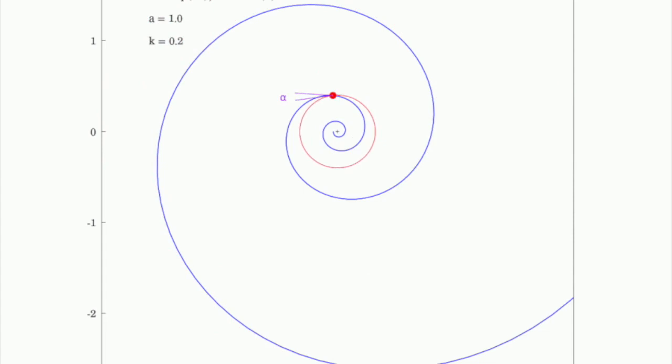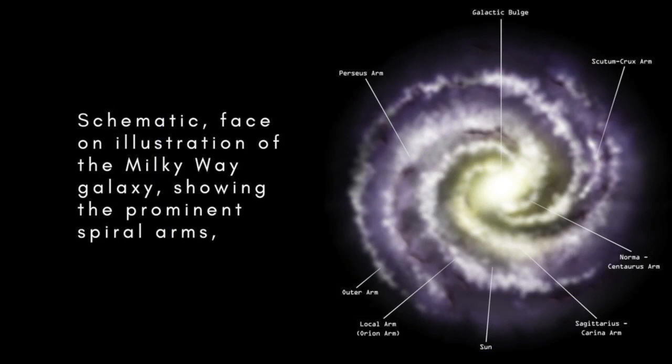Hawks approach their prey in the form of a logarithmic spiral, and their sharpest view is at an angle to their flight direction that is the same as the spiral's pitch.